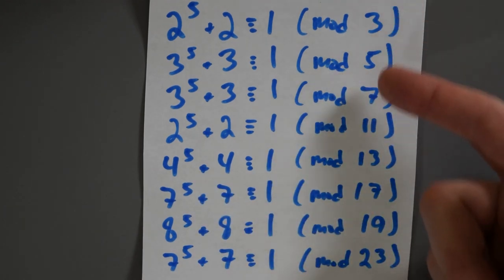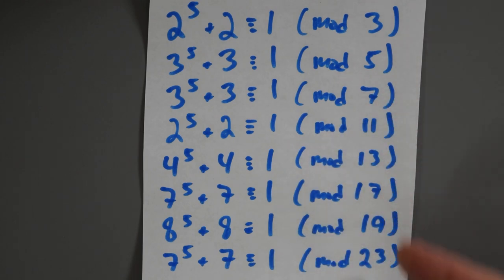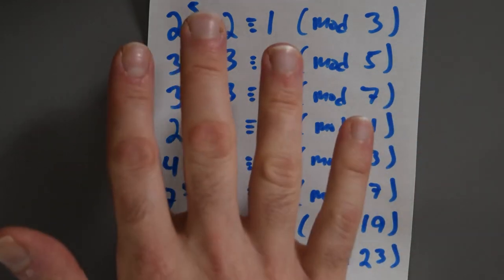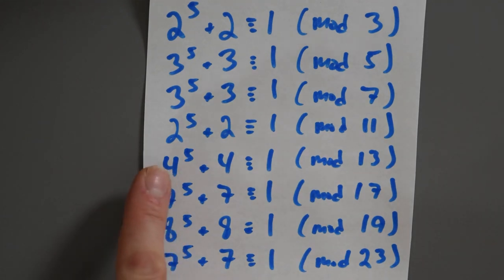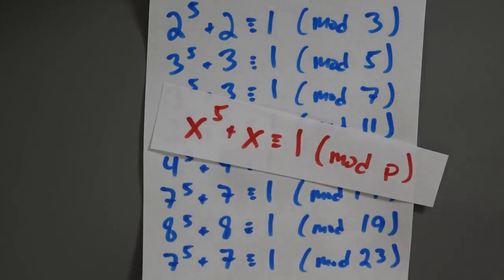Well, I noticed that three, five, seven, 11, 13, 17, 19, these are all prime numbers. And over here on the left-hand side, I've got a number to the fifth power plus that same number is congruent to one. So one sort of common pattern that I'm seeing here is that I've got a bunch of data that fits into this sort of shape. X to the fifth plus X is congruent to one modulo some prime.